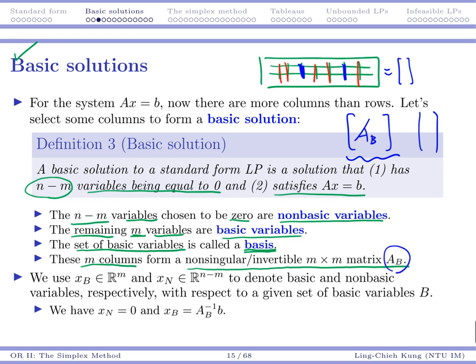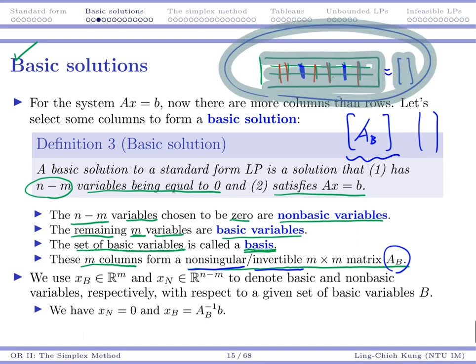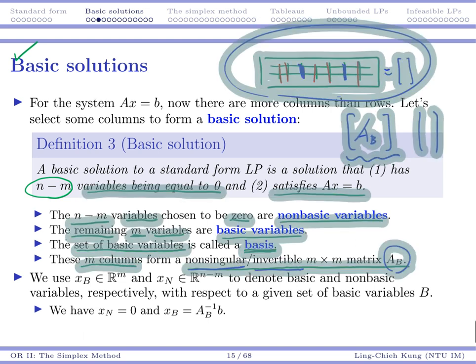This is our A_B. As long as it is non-singular or invertible, then we are able to find a solution for this system. So this idea actually in some sense is very simple.